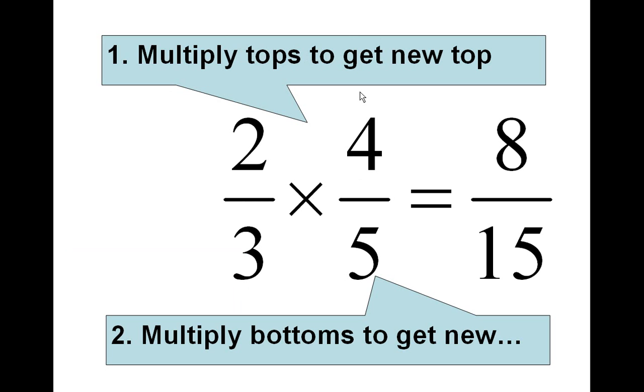So two thirds times four fifths gives you eight fifteenths as the fraction. Kind of straightforward, isn't it?